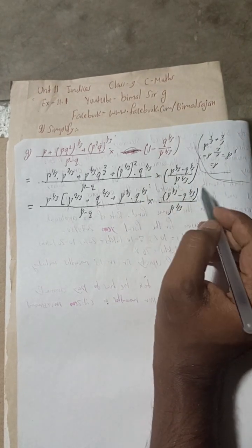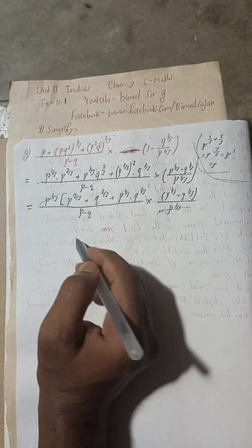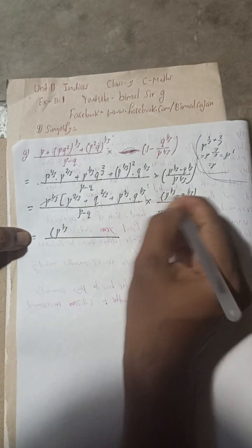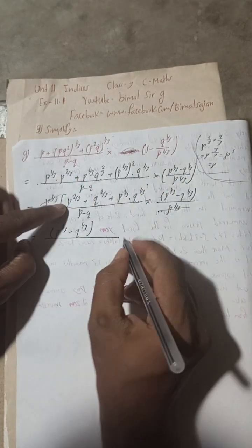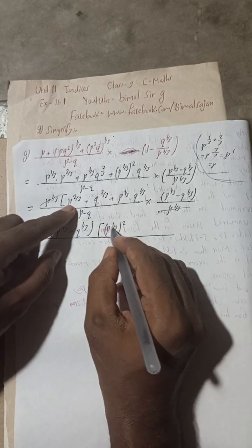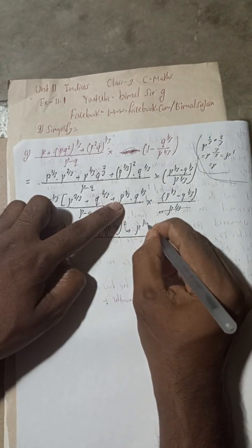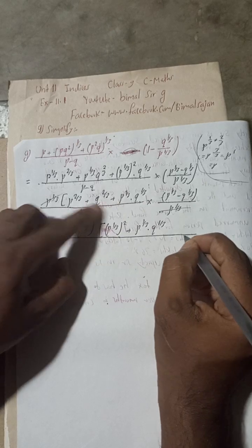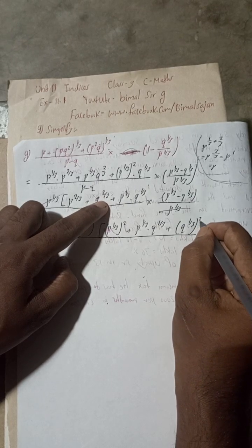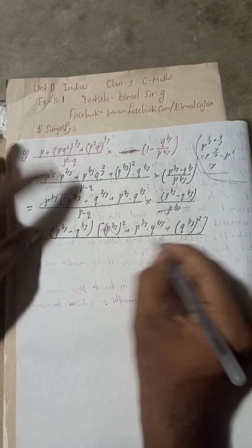We can see that something cancels up and down. Writing the numerator: P^(1/3) minus Q^(1/3) multiplied by — rewriting the bracket — P^(1/3) whole squared is P^(2/3), plus P^(1/3)·Q^(1/3), plus Q^(1/3) whole squared is Q^(2/3). The denominator is P minus Q. This expression in the numerator bracket matches the a² + ab + b² pattern.